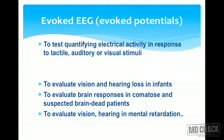Evoked EEG, or evoked potential, is used to quantify electrical activity in response to tactile, auditory, or visual stimuli. This is especially useful in infants when you cannot obtain verbal responses, allowing evaluation of vision and hearing loss. It can also be used to evaluate brain responses in comatose patients and suspected brain-dead patients. In patients with mental retardation, evoked EEG can evaluate vision and hearing.